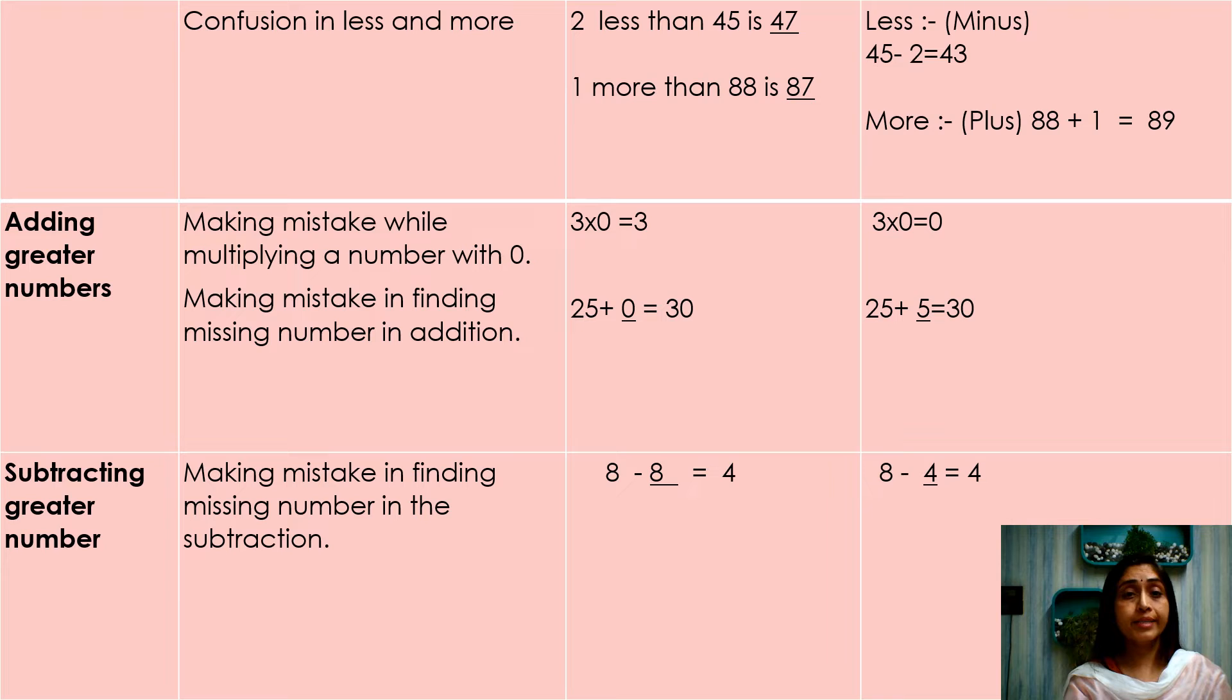Confusion in less and more. 2 less than 45 is 47, which is wrong. Answer is 43. Here they have to do subtraction. Less means subtraction. They have to keep in mind when minus, they have to go back. 1 more than 88 is 87, which is wrong. Answer is 89. More means plus. They have to go forward and count.